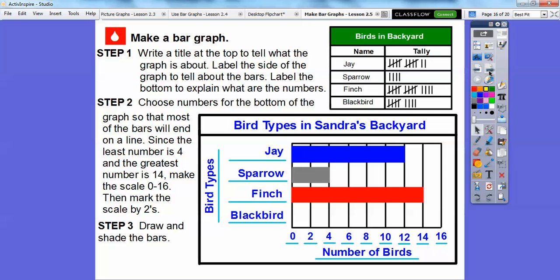And then blackbirds are going to go out to 9. Here's 5 plus 4 is 9. These only go by twos, so the blackbirds are going to go in between 8 and 10, so 9 will be right in the middle. There's a nice bar graph that represents the birds in her backyard.